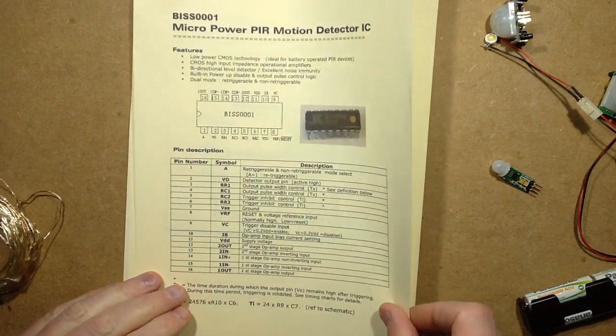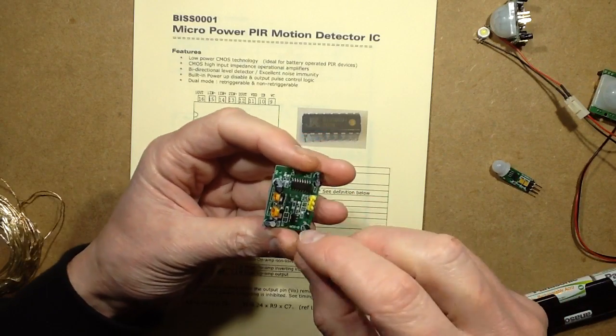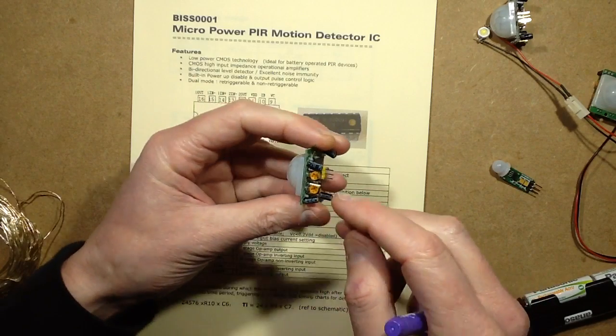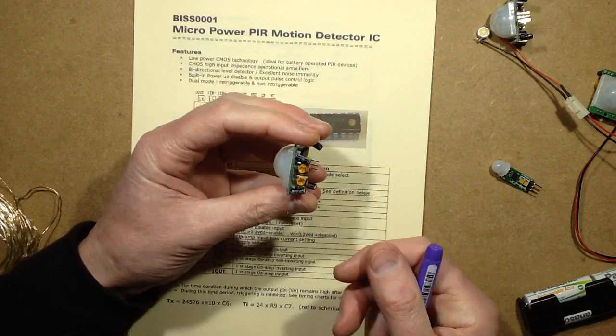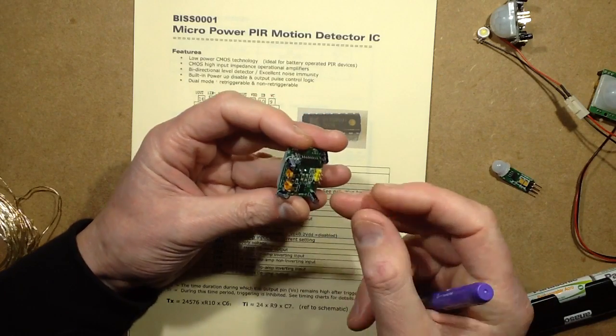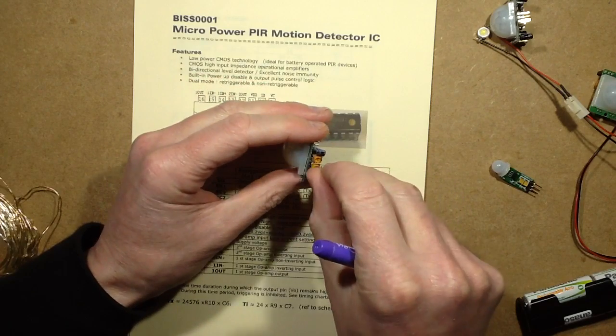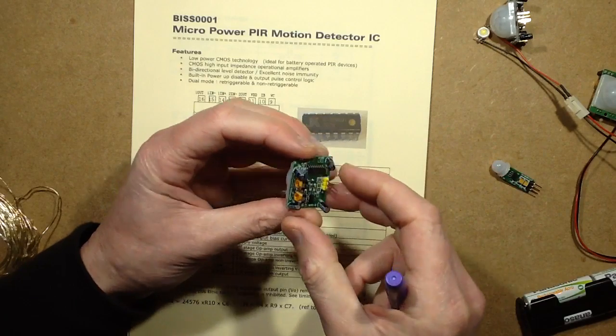Other things that are worthy of note: these things tend to have a sensitivity adjustment, which will usually be marked on it, and a time adjustment. The sensitivity just determines the range that it's going to detect - it's usually just best put up full. And the time, you want to set it down to not quite the minimum but just off the minimum. But you may have to play about with these settings just to tweak them to get them absolutely perfect.